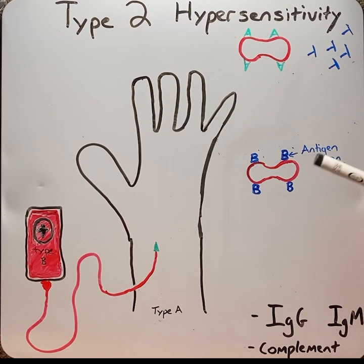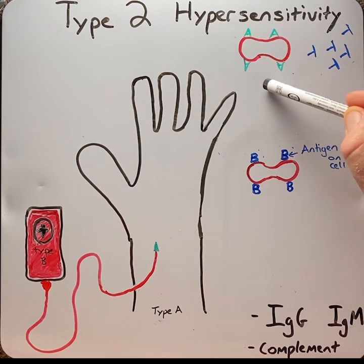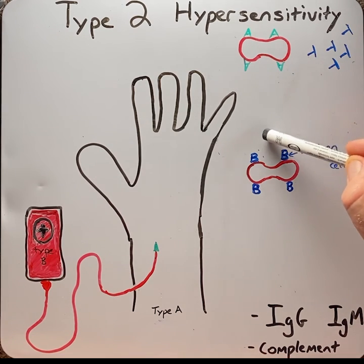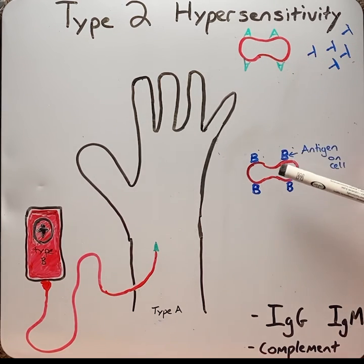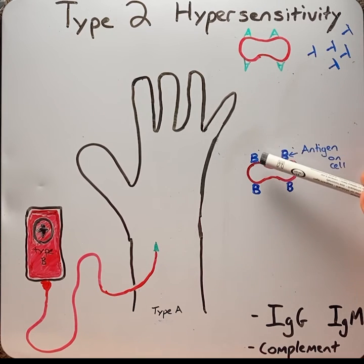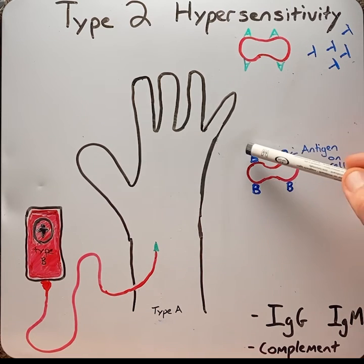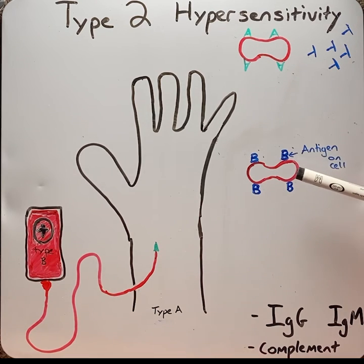In the extrinsic example, the antigen comes from outside the body. An example could be penicillin, which then binds to red blood cells, activates the immune system, and leads to their destruction or cytotoxicity.